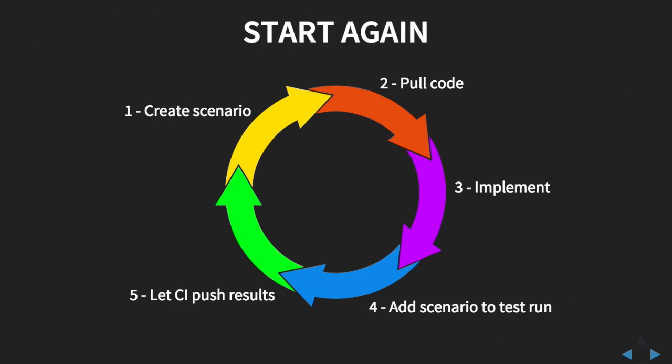And that's it. These simple five steps — from creating a scenario to pushing the results to HipTest — that's just those five steps. One important thing to note is that most of the tasks described are only done once: configuring the CI task is done once, and configuring HipTest Publisher is done just once.